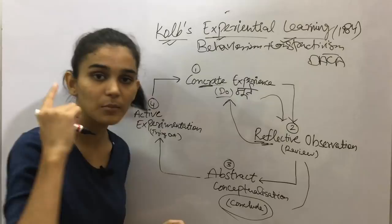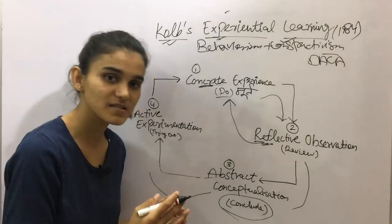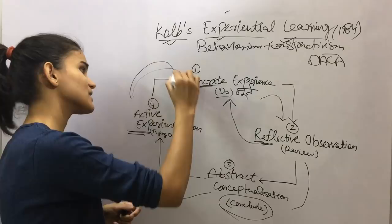The fourth and last step is Active Experimentation. When you had the abstract concept or idea, now you implement it. You try it out, you plan it, and you see how you can put it into practice. You make that work — Active Experimentation. After this, you can repeat the cycle again, adding new learning each time.